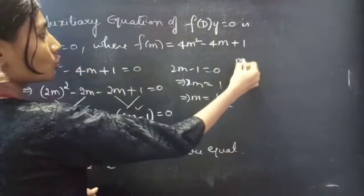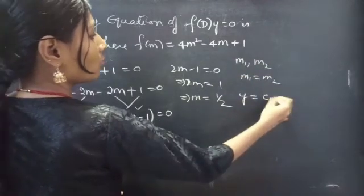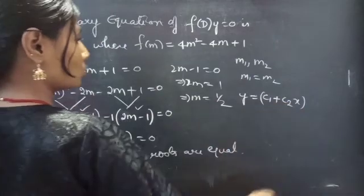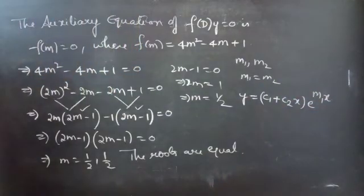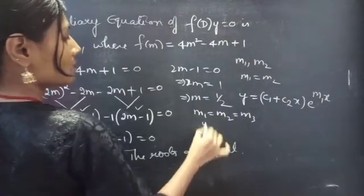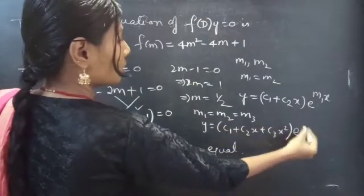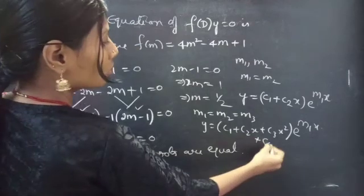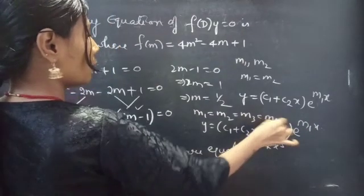We know that if two roots are equal — that is, m1 equals m2 — then the general solution is y equals (c1 plus c2·x) into e^(m1·x). What if you have three equal roots? Then y equals (c1 plus c2·x plus c3·x²) into e^(m1·x). And for four equal roots, include one more term: c4·x³ into e^(m1·x).